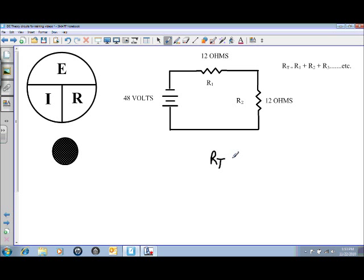R total is equal to R1 plus R2, and put in the values of the resistors.